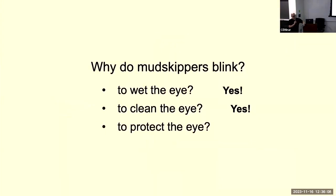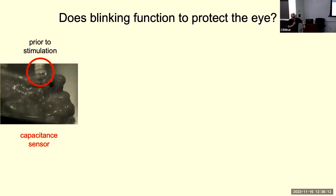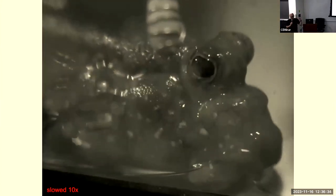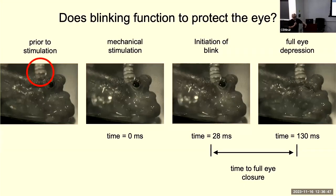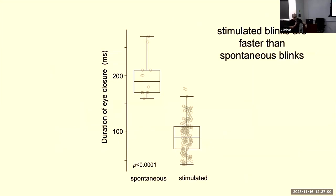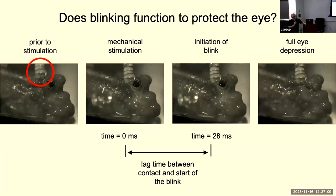The next thing we tested was whether blinking is also related to protection. Students designed rigs with a robotic arm that touches the fish in the eye and stops immediately at contact — a capacitance sensor sets off a light the instant contact is made. This allowed us to record the kinematic profile and exact timing. Every time the cornea was touched with the probe, it induced a blink behavior. Comparing these mechanically induced blinks to regular spontaneous blinks, the induced blinks are faster with a distinct kinematic profile.